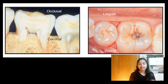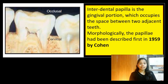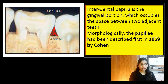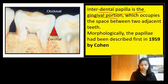Where exactly does the interdental papilla lie in this interdental space? The interdental papilla occupies the cervical or gingival embrasure in the interdental space. The interdental papilla occupies the gingival or cervical portion, and it was first described in the year 1959 by Cohen.